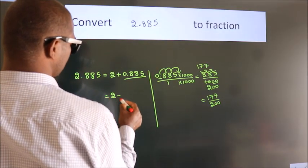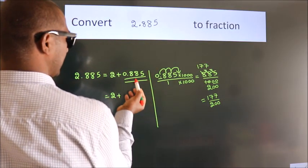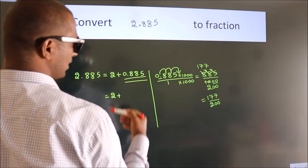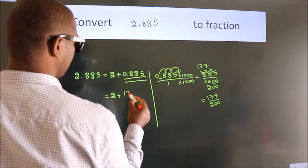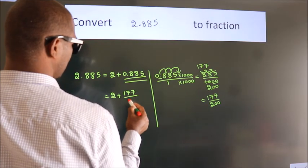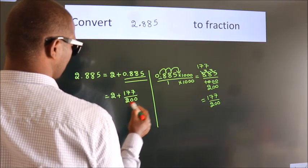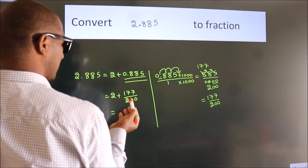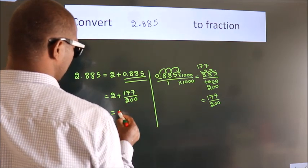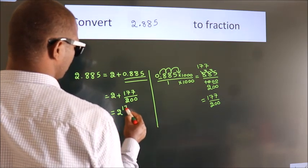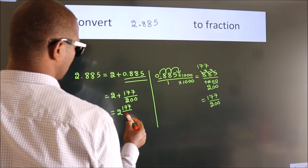2 plus, in place of 0.885, now we write this fraction 177 by 200. 2 plus 177 by 200. In mixed fraction it is 2 and 177 over 200.